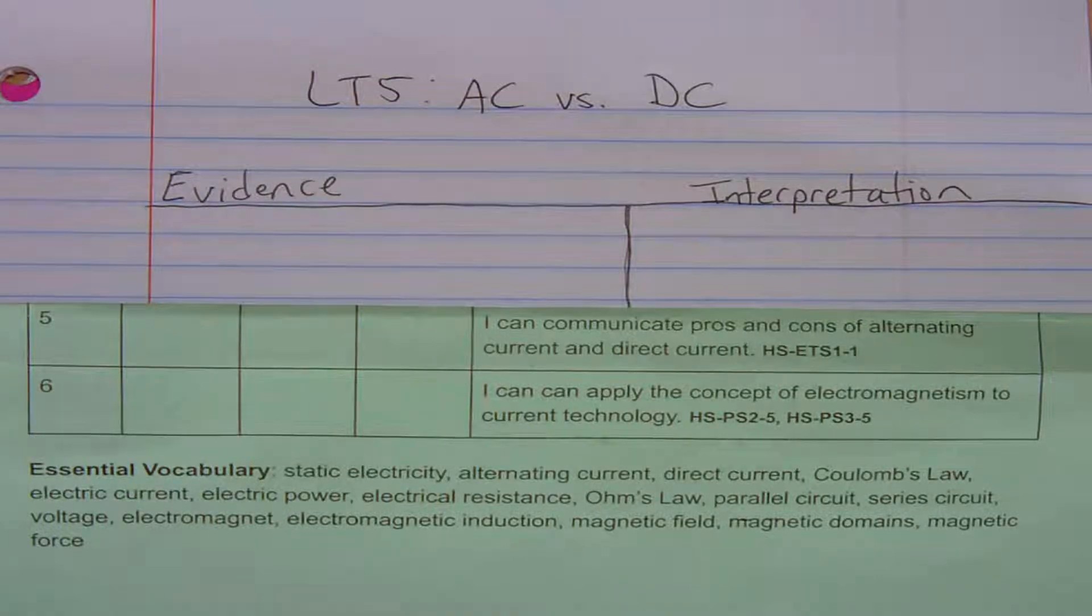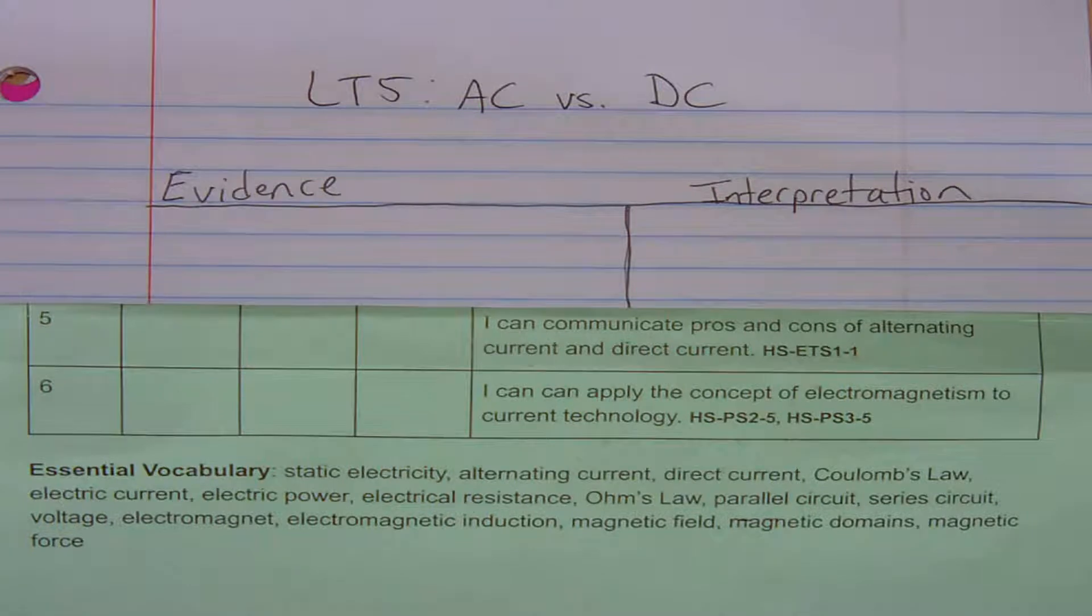These are the notes for LT5 within the electromagnetism unit, and the target says that you can communicate the pros and cons of alternating current compared to direct current. So AC versus DC.